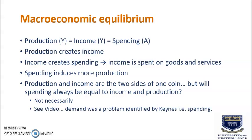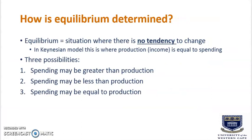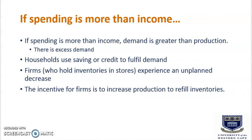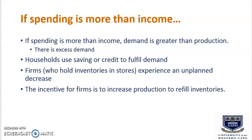But will spending always be equal to income and production? Not necessarily. Keynes identified demand as a problem. Equilibrium is a situation where there is no tendency to change; in the Keynesian model this is where production or income equals spending. If spending is more than income, demand is greater than production — there is excess demand. Households use their savings or credit to fulfill their demand, and firms experience an unplanned decrease in inventories, giving them the incentive to increase production.